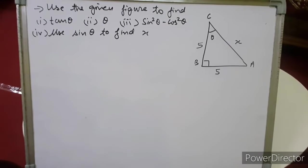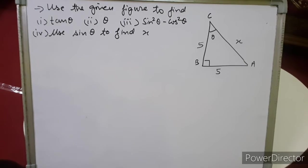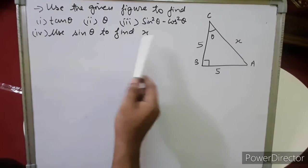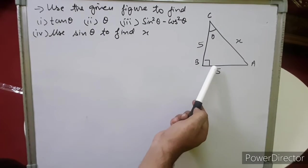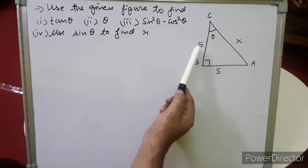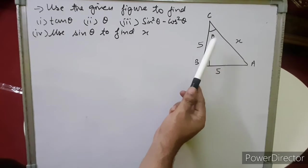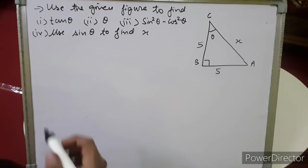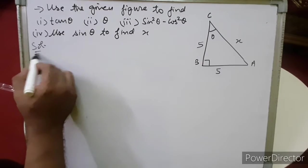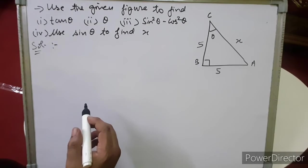Now, use the given figure to find: tan θ; θ; sin²θ − cos²θ; and use sin θ to find x. The diagram is a right-angle triangle ABC with the right angle at B. The two legs are both 5, the hypotenuse is x, and angle C has value θ. Let us calculate the value of tan θ.